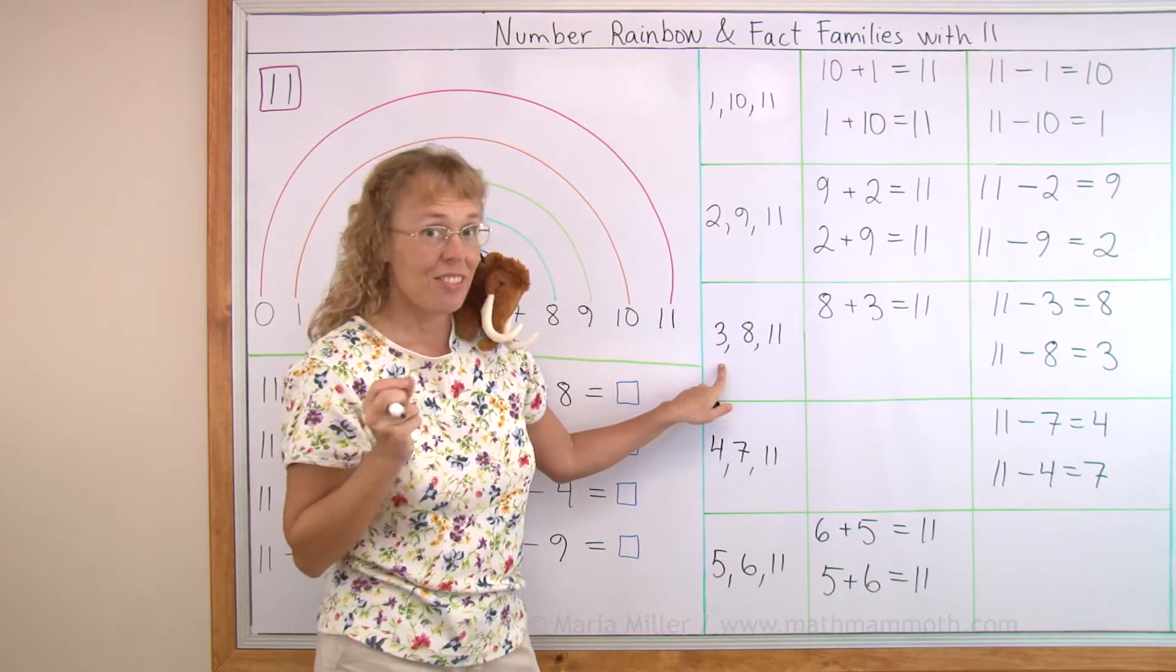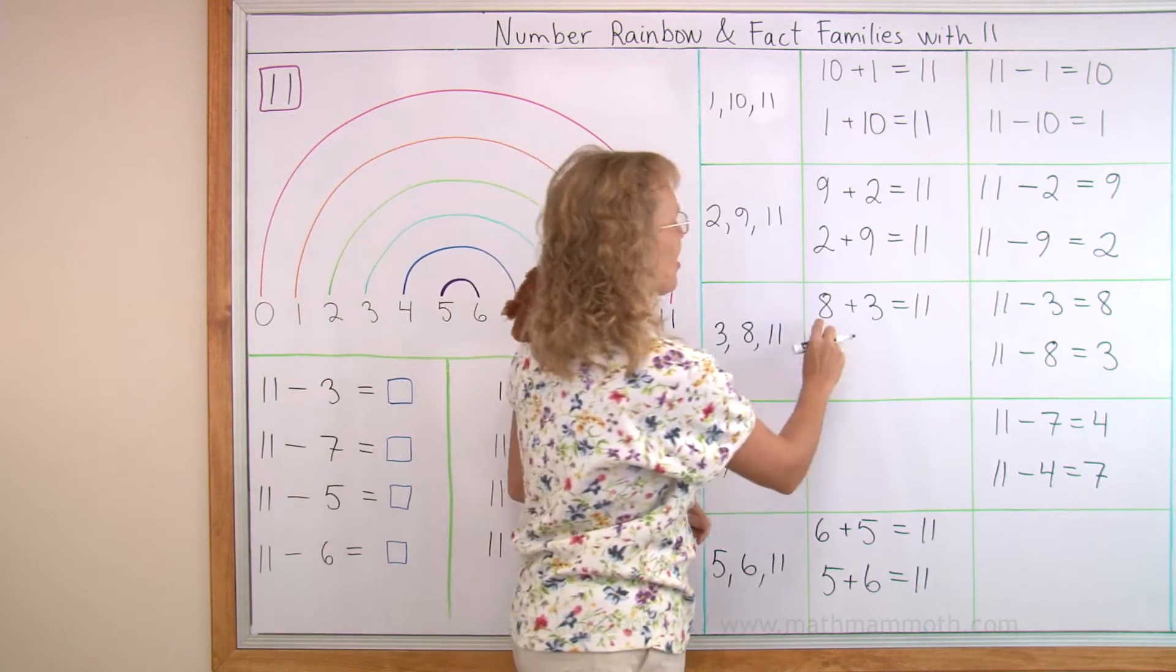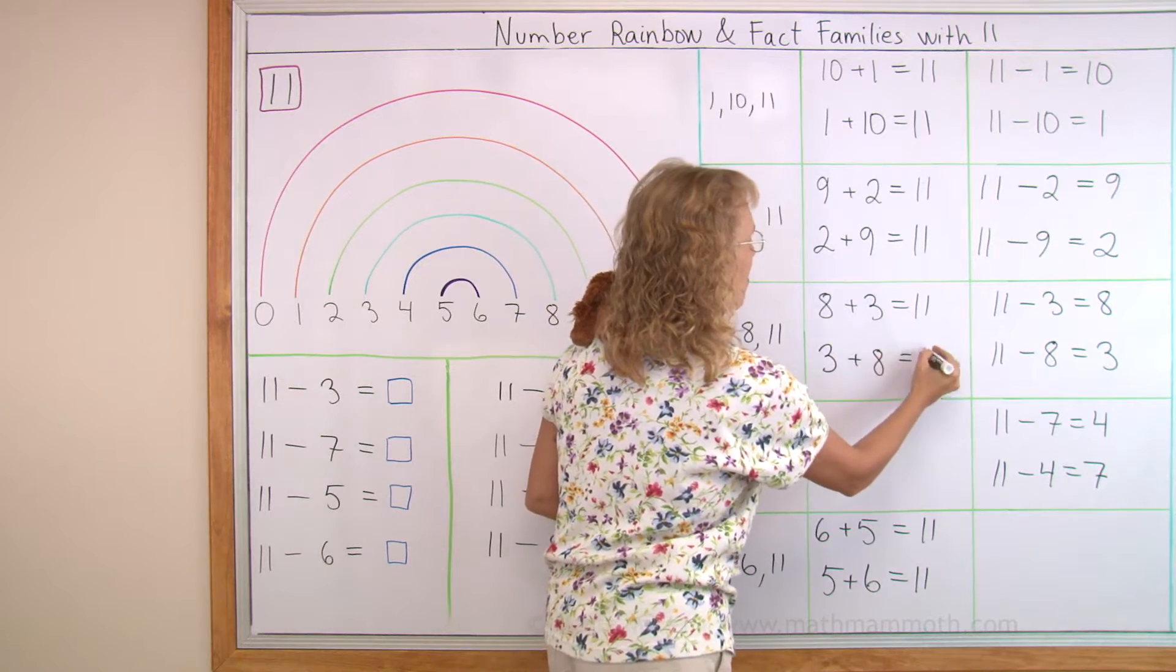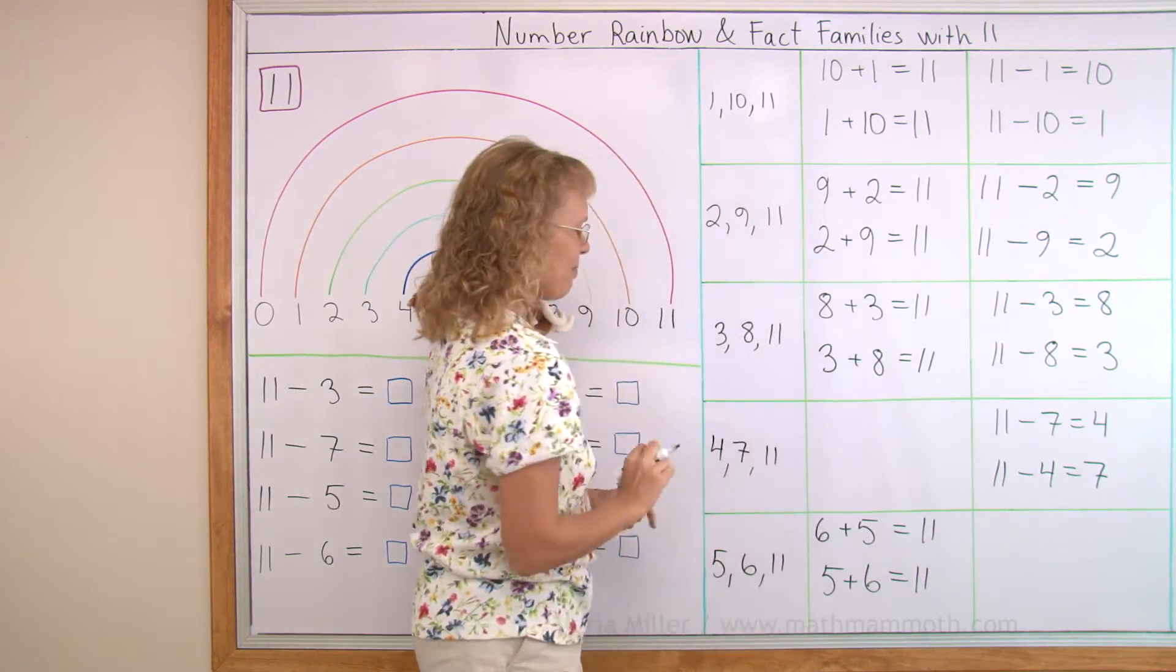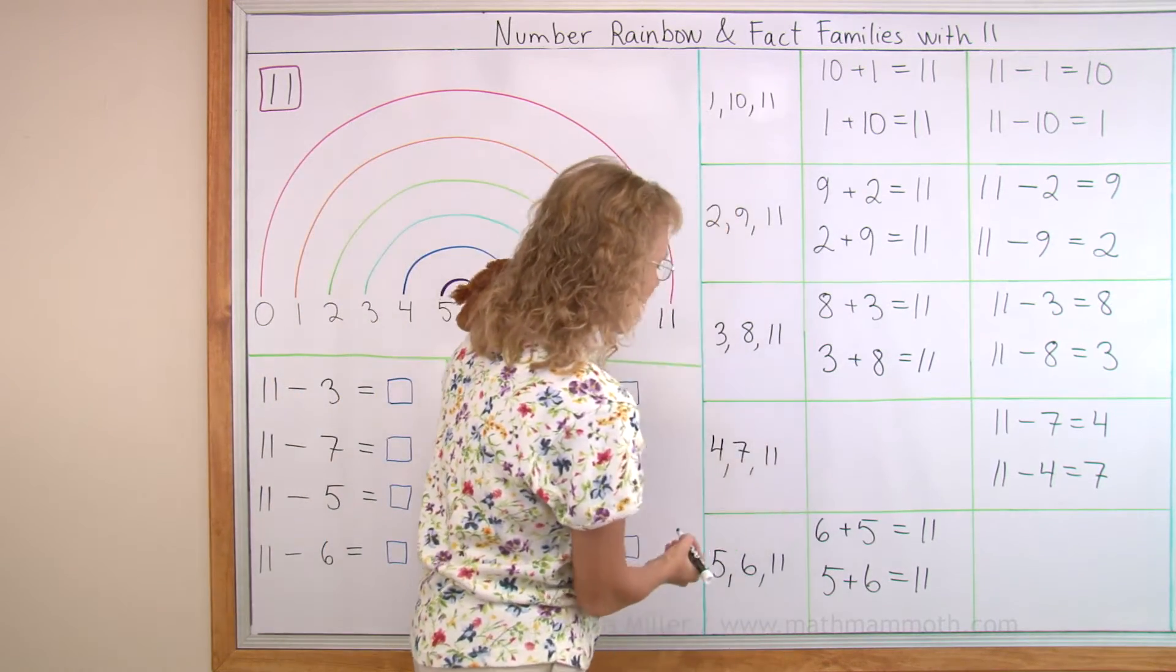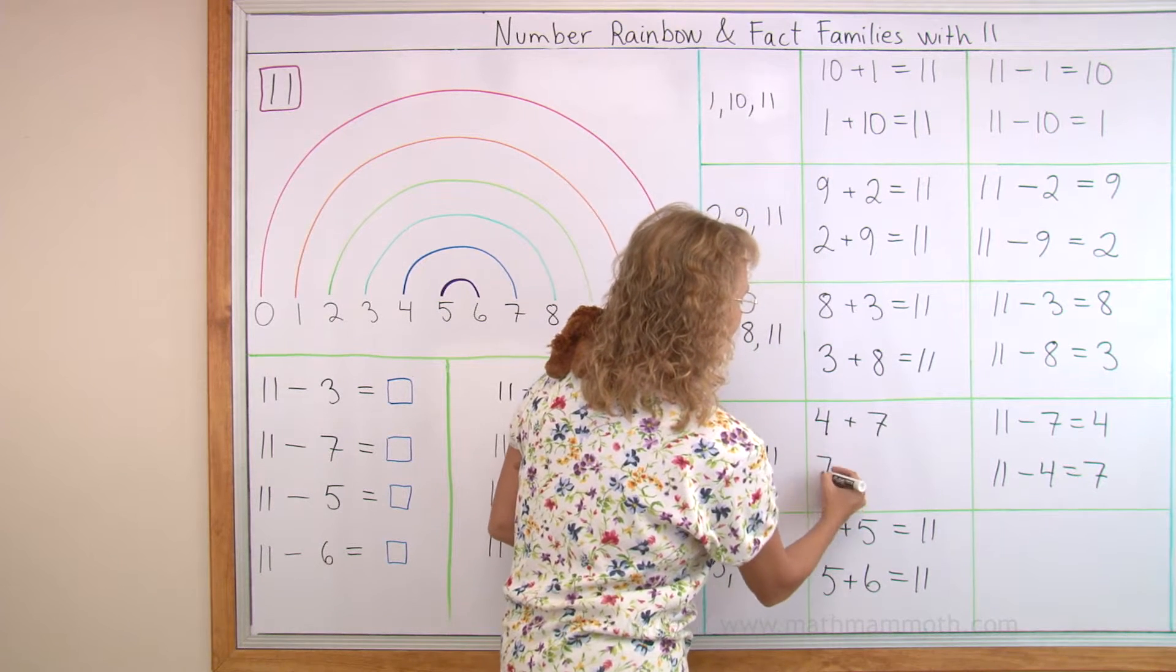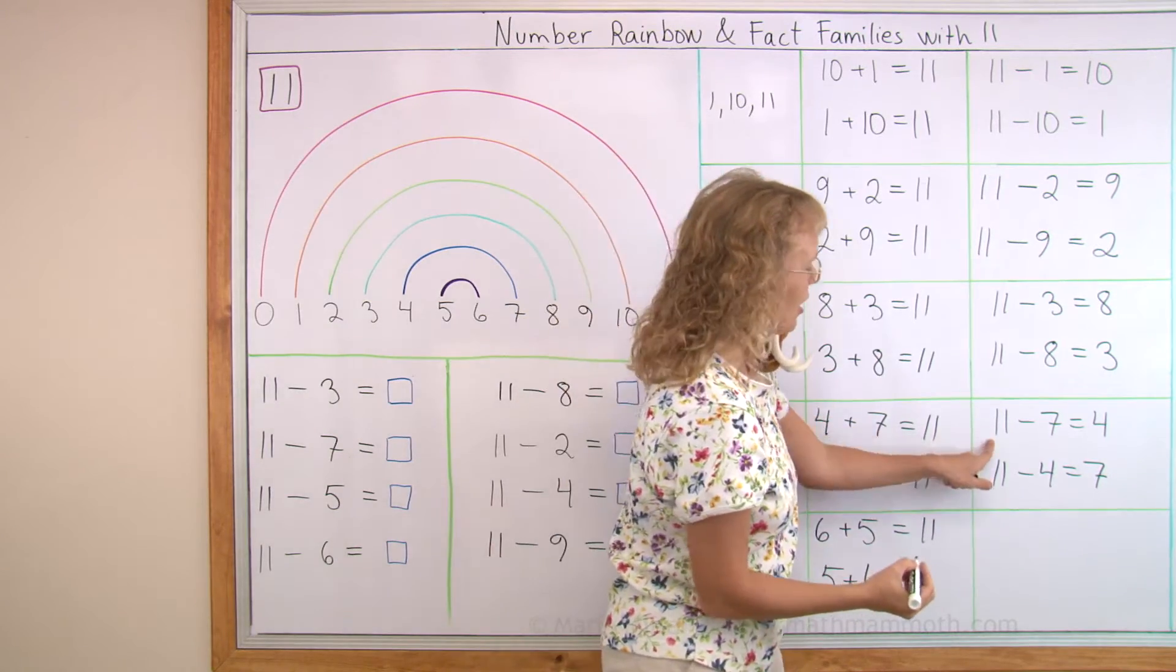Over here the next fact family has 3 and 8 making 11. So 8 plus 3 and the other addition here is 3 plus 8, right? The subtractions are ready. Over here 4 and 7 make 11 too. So we write the two additions. 4 and 7 or 7 and 4 make 11. Subtractions are done.